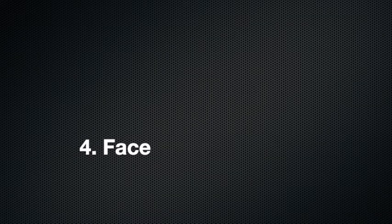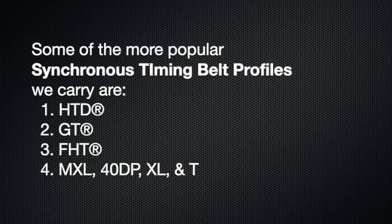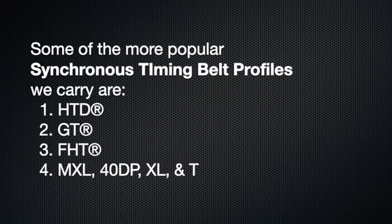4. Face: The belt face can be a different or the same material as the backing. The belt face is the surface on which the teeth sit.